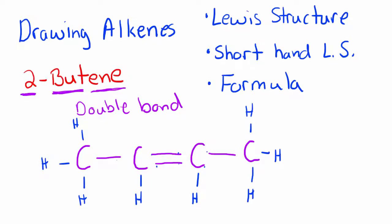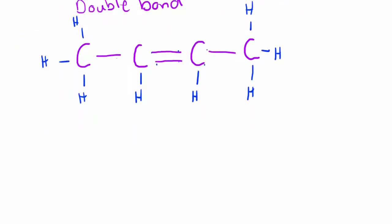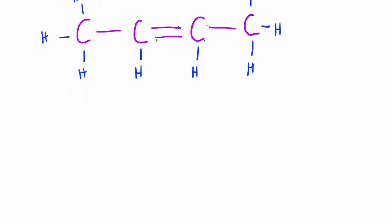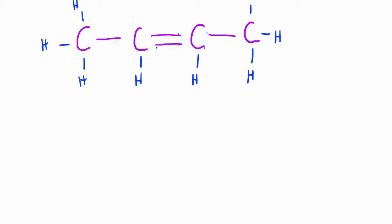Now we want to draw the shorthand Lewis structure. So I'm going to scroll down a little bit and I'll keep the full Lewis structure there so that we can refer to it and then we've got some space here to draw our shorthand. Okay so it's the same with the original alkane that we drew. We're going to draw the carbon and then we'll collapse the hydrogens.